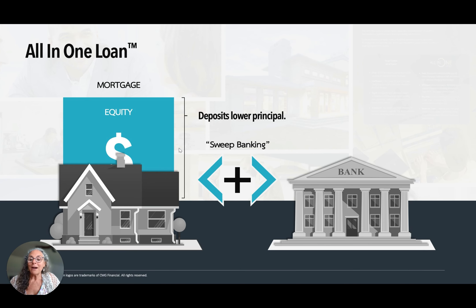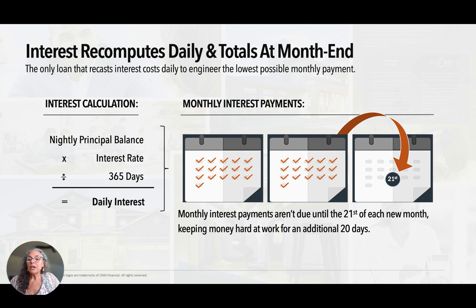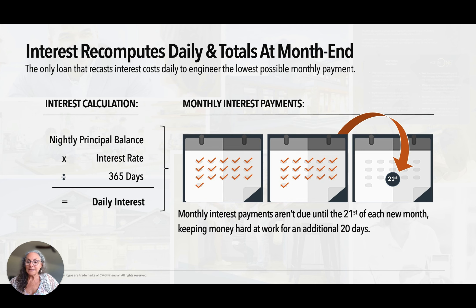So now we're going to talk about how interest is calculated. Interest is calculated every single day on the all-in-one loan. It takes the nightly principal balance multiplied by the daily interest rate — that's the interest rate divided by 365 days — which gives us a daily interest calculation. Simple interest: not compounded, not amortized, simple interest.